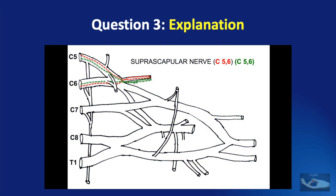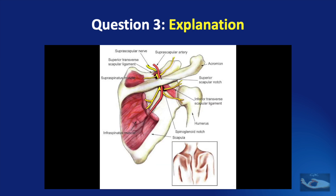The suprascapular nerve arises from the upper trunk with a root value of C5-6. It gives sensory supply to the glenohumeral and acromioclavicular joints, and motor supply to the supraspinatus, which stabilizes and abducts the shoulder, and the infraspinatus, which stabilizes and externally rotates the shoulder.